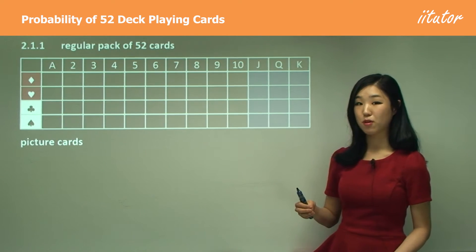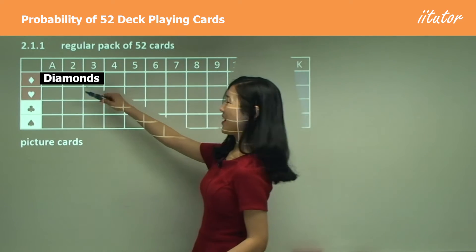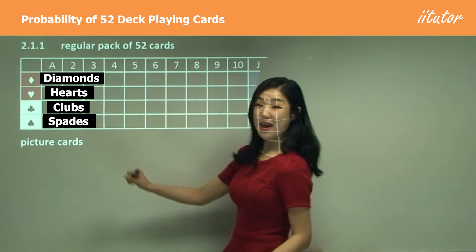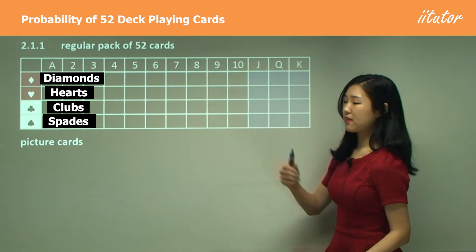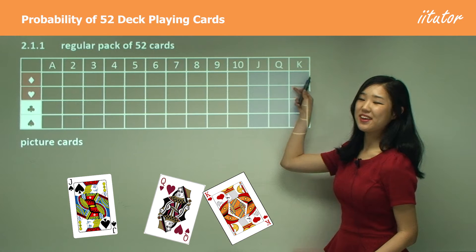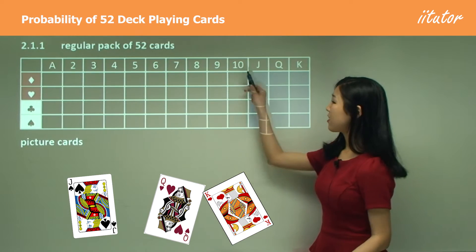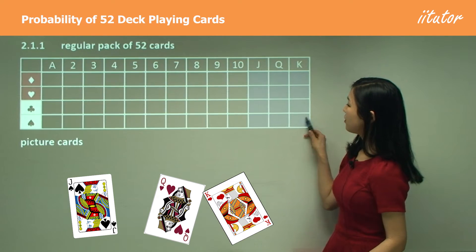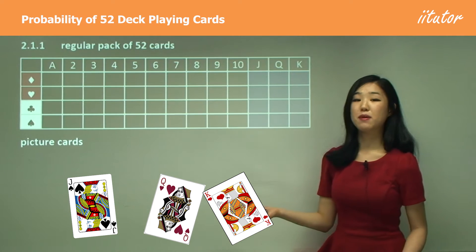I've got diamond, heart, clover, and spade here, so there's four shapes in the pack of cards. I've got ace up to ten, Jack, Queen, and King. It says picture cards, and you can see this part here colored in blue—these three are simply the picture cards. One, two, three, four... so twelve in total.